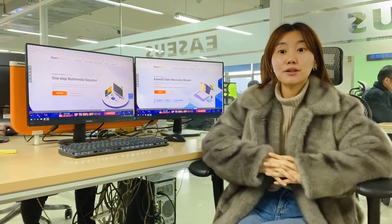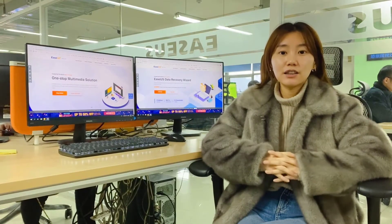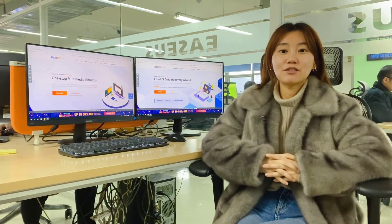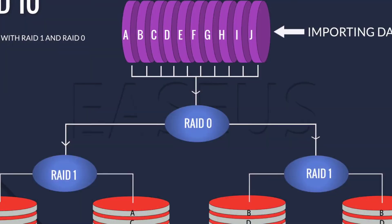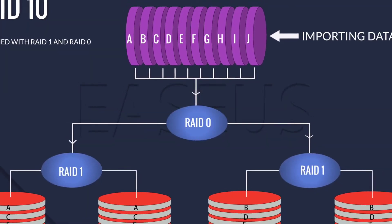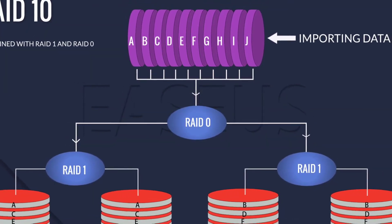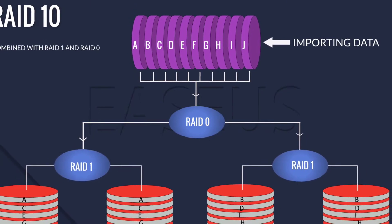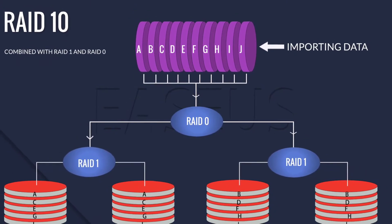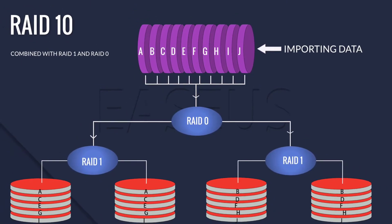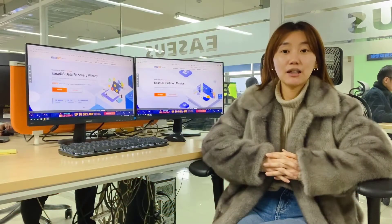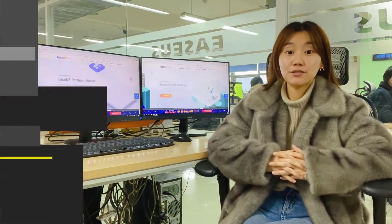It is possible to combine the advantages of RAID 1 and RAID 0 in one single system. RAID Level 10 provides security by mirroring all data on secondary drives while using striping across each set of drives to speed up data transfers.